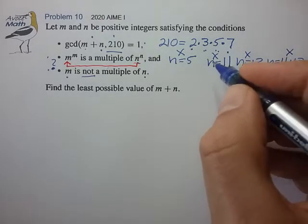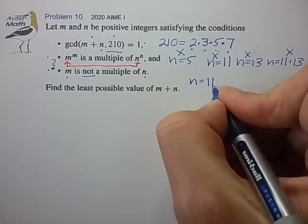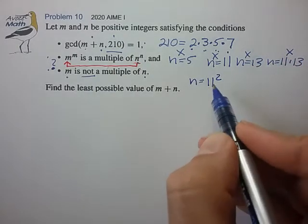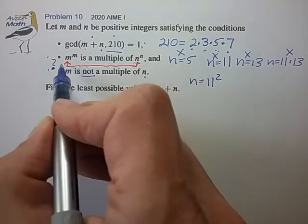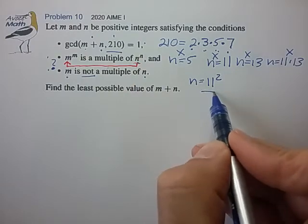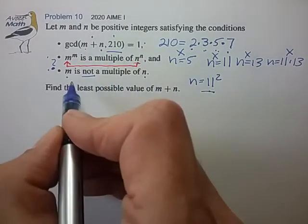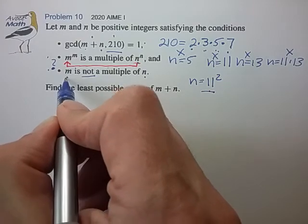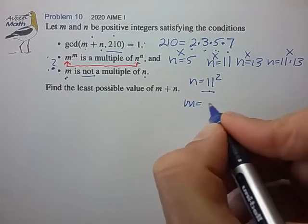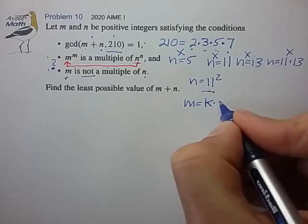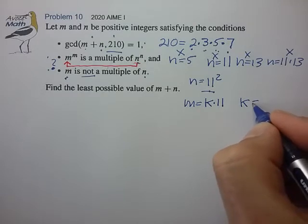So at that point, you may guess that perhaps we want to let n equal 2 factors of 11, such that when n is equal to 11 squared, m will pick up at least one factor of 11, but perhaps not 2 factors of 11, so that we don't violate this third condition.